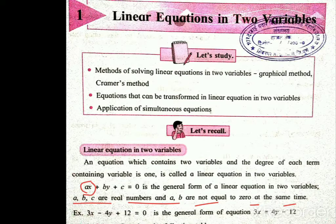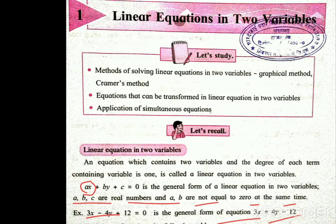Linear equations in two variables hoonar nahi. Here, example is given: 3x minus 4y plus 12 is equal to zero is the general form of the equation 3x is equal to 4y minus 12. Ithe 3x is equal to 4y minus 12 he equation dhelela hai, ani he general form madhe kasali hai sathe ithe example madhe sanghit lela hai.